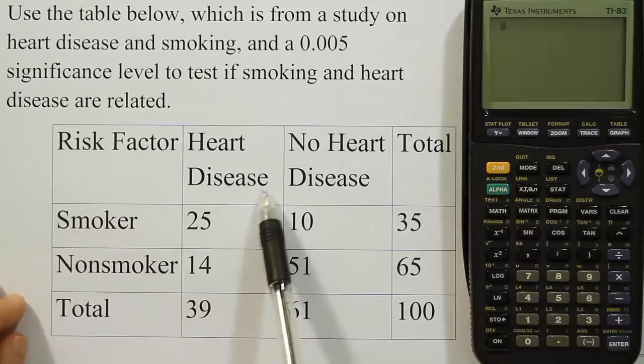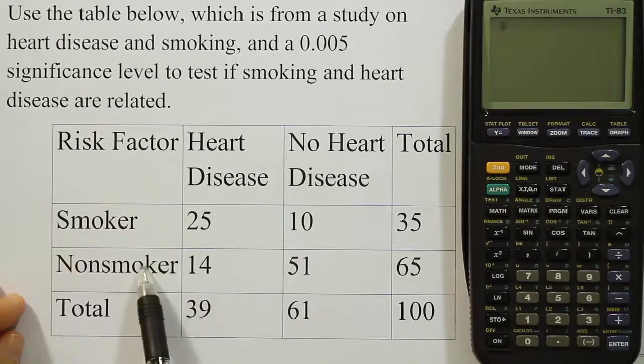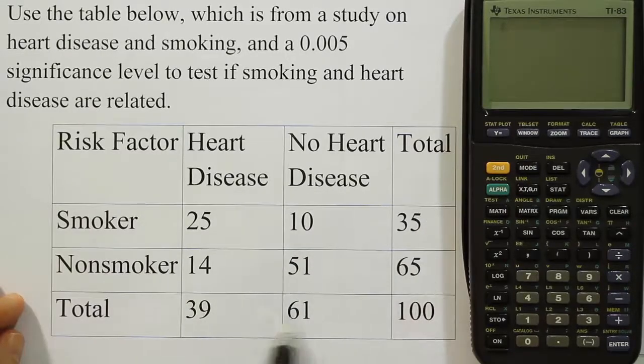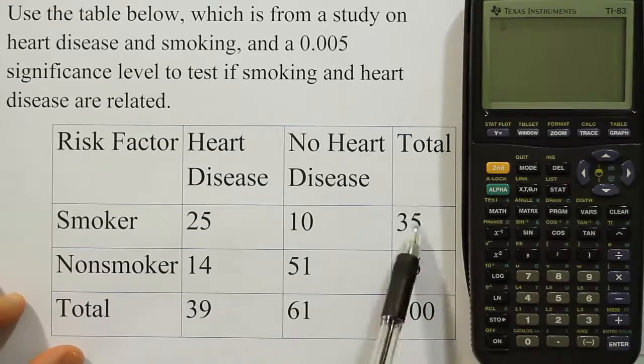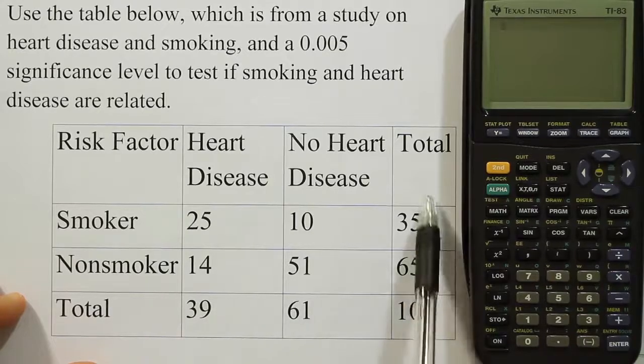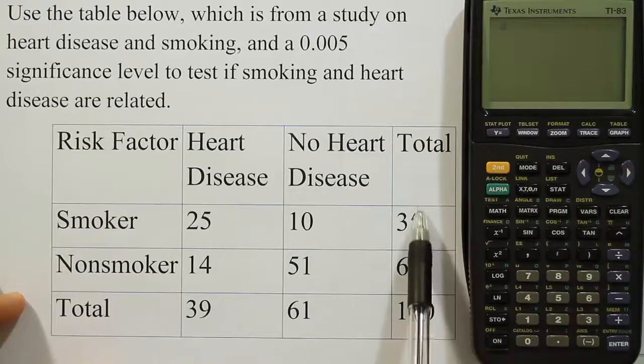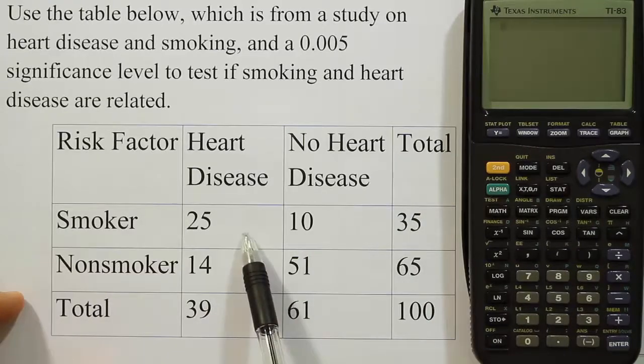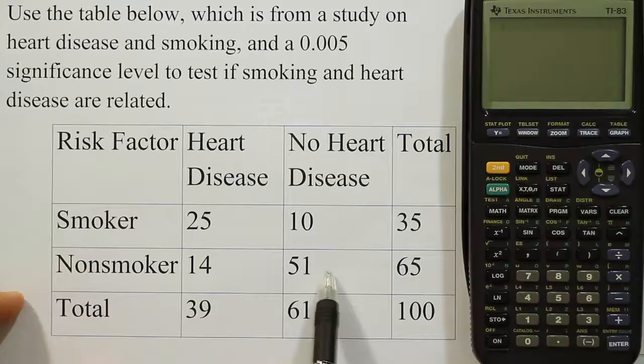Let's look at how the table is set up. It has heart disease, no heart disease, smoker, non-smoker, and totals. The original data is not these totals—it's these four cells that represent the original data. The totals are just summary information that helps us do calculations by hand. We don't need these totals if we're using the graphing calculator. All we need are these four cells which correspond to the original counts from the study.